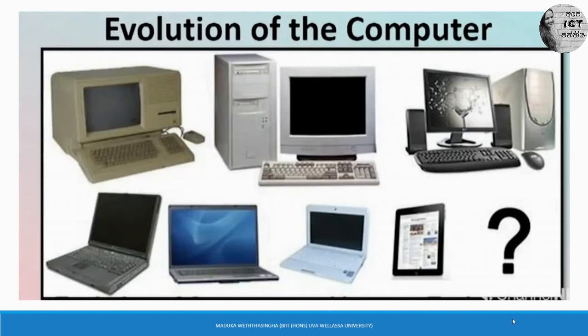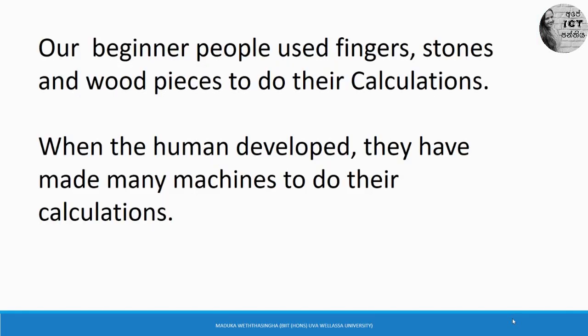Our ancient people used stones, pearls, pieces of wood, and bones of animals to do some calculations — like adding, subtraction, and likewise. But when people developed themselves, they used some machines to do their calculations. They developed small machines instead of using their fingers, stones, and other things found from their surroundings.